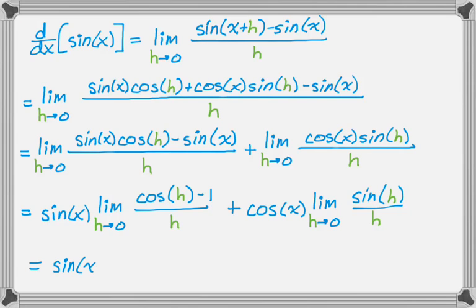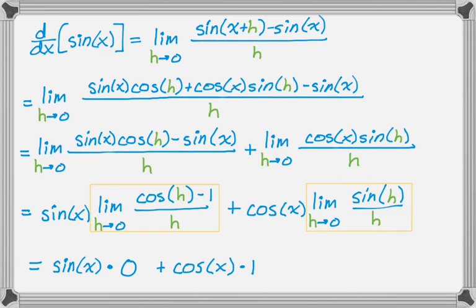So this is going to be sine of x times the limit as h approaches 0 of cosine of h minus 1 over h — we know that's 0 — plus cosine of x times the limit as h approaches 0 of sine of h over h — that's 1. So overall, this becomes cosine of x. The derivative of sine of x is cosine of x, and we've proved it.